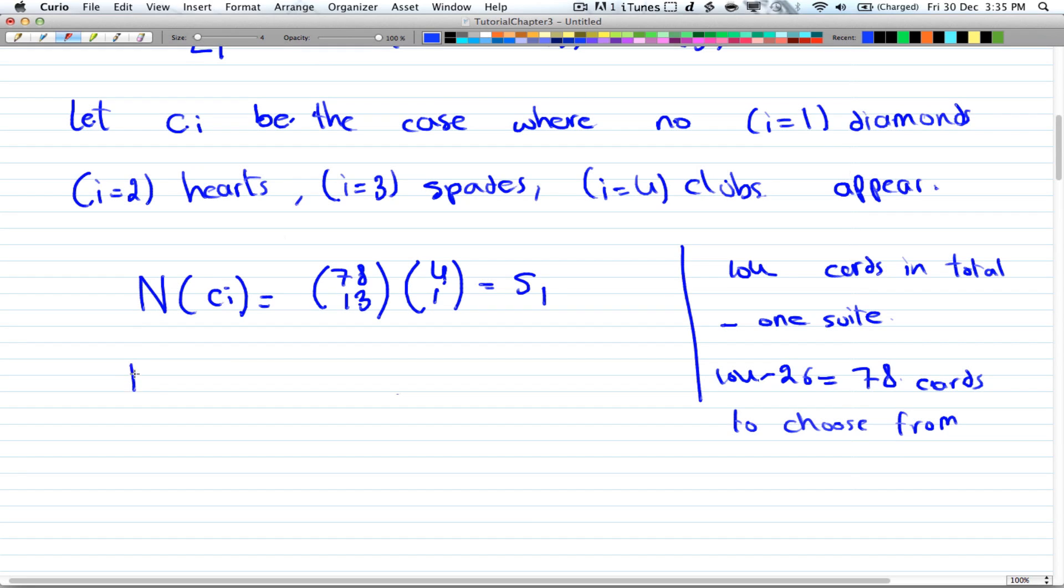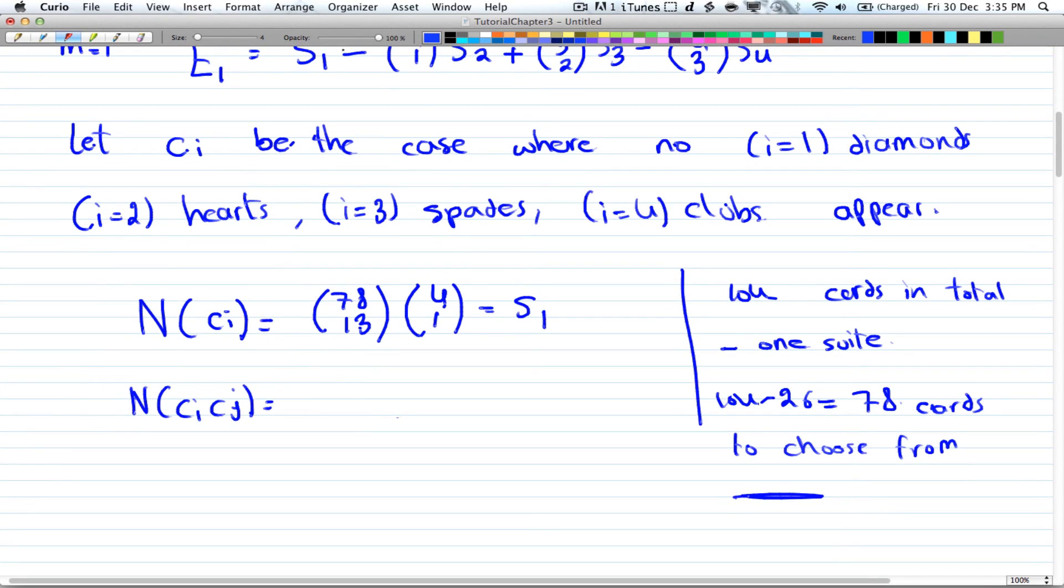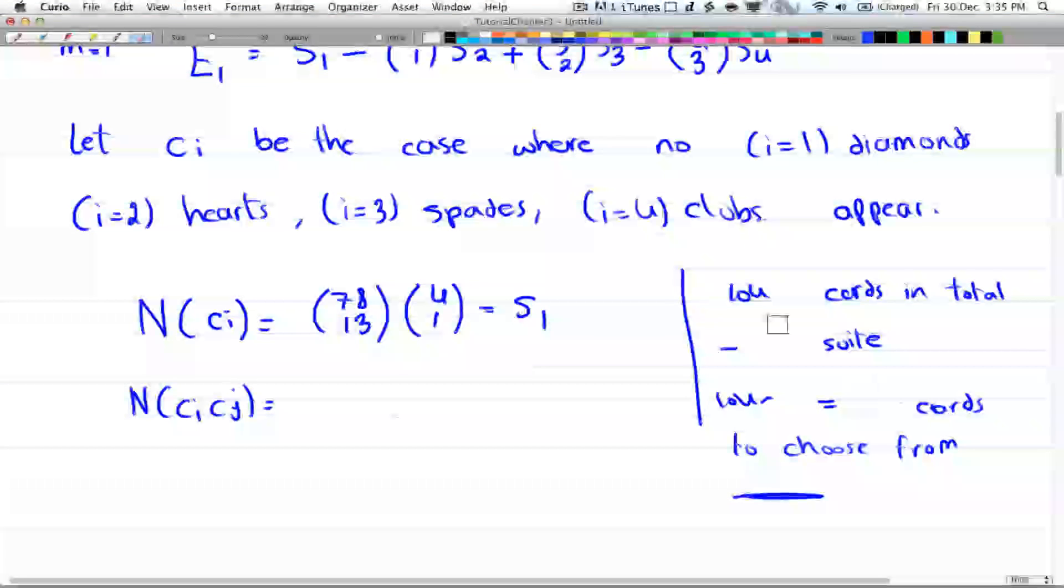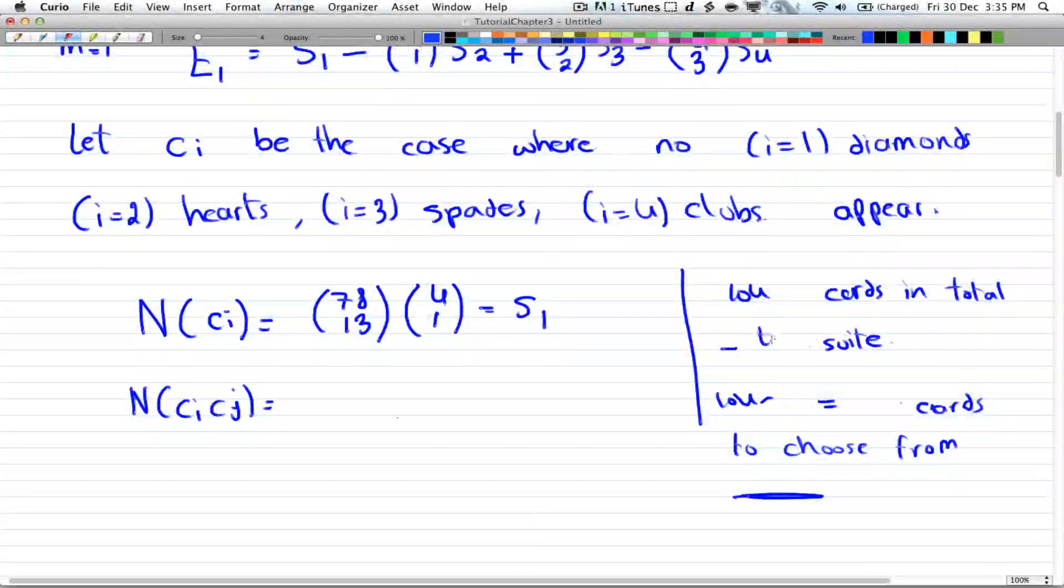Now we have our s_2. So N of c_i intersect c_j, and that will be the same concept that we applied over here, but instead of 1 suit you have 2 suits. So over here you have 2 suits, and that will be 104 minus 52, and that will give you 52 cards to choose from. So over here you get 52 choose 13. And since we're dealing with 2 suits over here, you have 4 choose 2. So 4 choose 2 suits times 52 choose 13 cards, and that will be equal to our s_2.